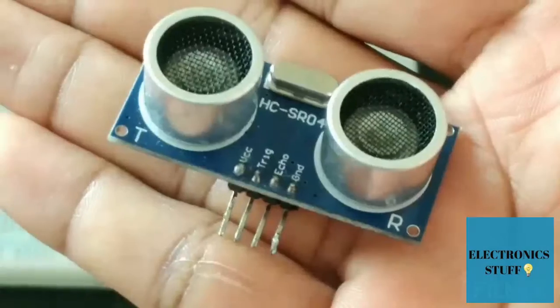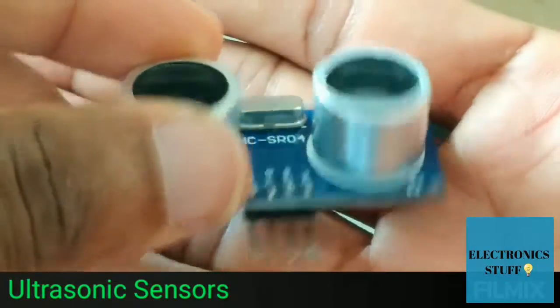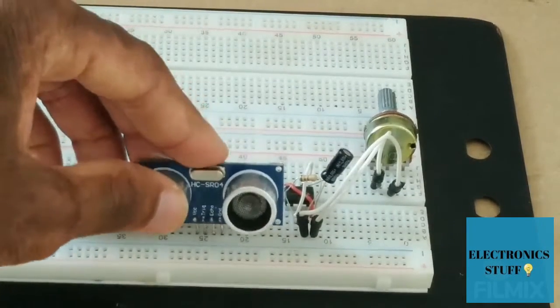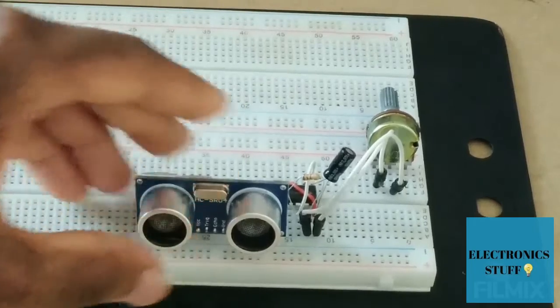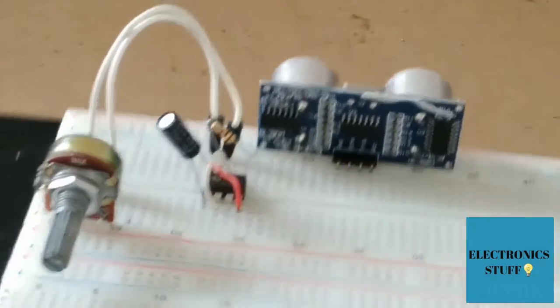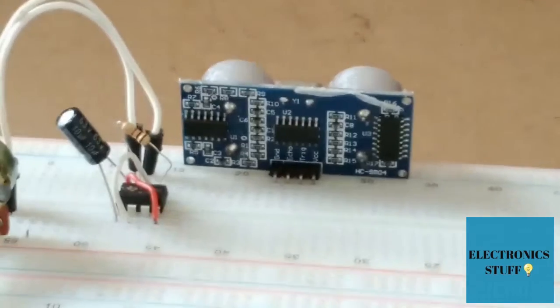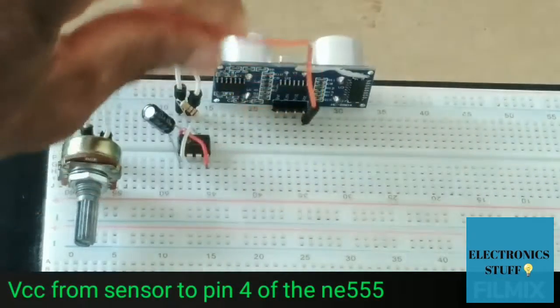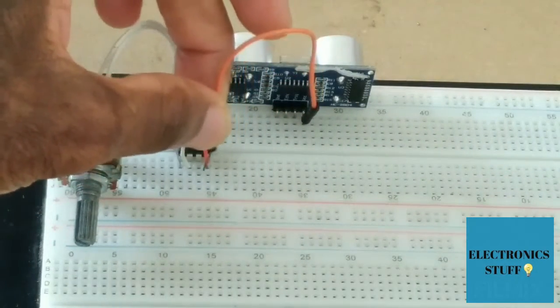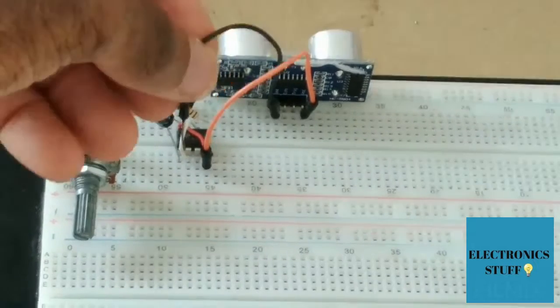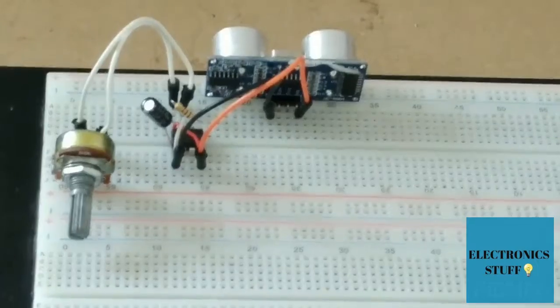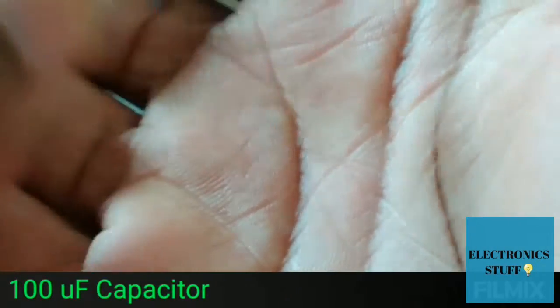Now the sensor, the VCC is going to pin 4 because pin 4 is VCC of the IC. VCC to pin 4 as I mentioned, and the ground of this sensor to ground, to pin 1.